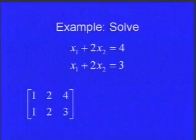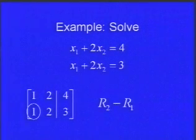First row would be [1 2 4], second row would be [1 2 3]. If I try to get rid of the one in the bottom row by doing row two minus row one, I'll do one minus one, two minus two, and three minus four. So across the bottom row I get [0 0 -1].